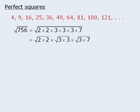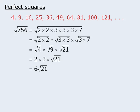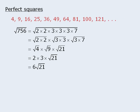Notice that 2 times 2 is 4, 3 times 3 is 9, and 3 times 7 is 21. The square root of 4 is equal to 2, the square root of 9 is equal to 3, and the square root of 21 we leave as is since there is no nice integer value for it. When we combine these terms, the square root of 756 is equal to 6 root 21.